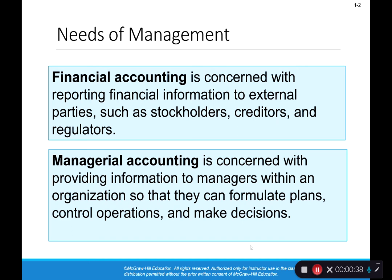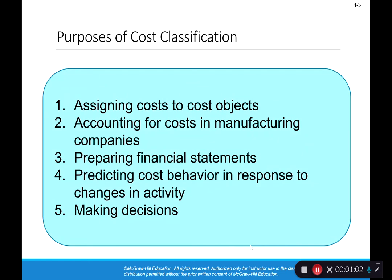We need to understand what management needs in accounting information in order to make their decisions. Management has to have the information necessary to formulate plans, control operations, and make decisions — and that's the type of information we need to provide in managerial accounting. The first concept we're going to talk about is cost classification.